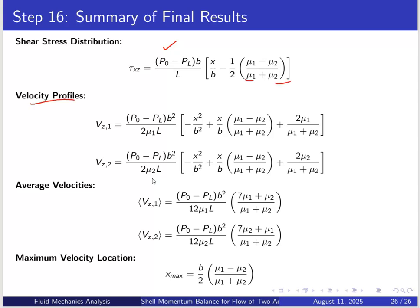The velocity profiles are: Vz1 equals [(P0 minus PL)·B²/(2 mu1 L)]·[1 minus (x/B)² plus (x/B)·(mu1 minus mu2)/(mu1 plus mu2)], and similarly for Vz2. Average velocities: Vz1_avg equals [(P0 minus PL)·B²/(2 mu1 L)]·(7mu1 plus mu2)/(mu1 plus mu2), and similarly for Vz2_avg. Maximum velocity location: x_max equals (B/2)·(mu1 minus mu2)/(mu1 plus mu2). Thank you.